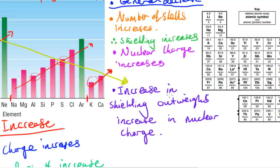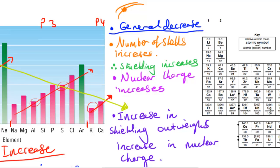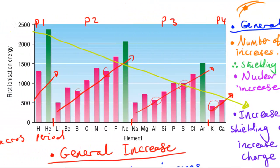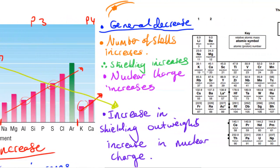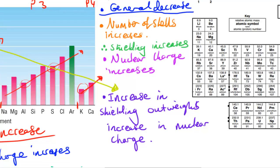That's the reason why, even though the nuclear charge increases, the general trend is still that the overall first ionization energy decreases when you go between different periods — or down a group. So those are basically the different factors which affect ionization energy and the reasons behind this trend which you can see in this graph. I hope you found this video helpful and I'll see you in the next video.